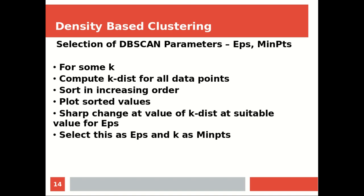Where there is a sharp change in the plotted k-distance values, that indicates a difference in density between clusters and noise — this sharp change corresponds to your ideal radius. The value of k-distance at the sharp change can be thought of as a suitable value for EPS. So EPS is chosen using this k-distance approach, and min points is set equal to k.